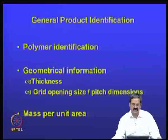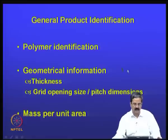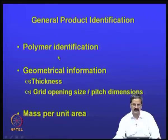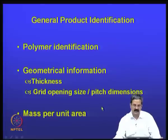We should first identify what the material is. If you have a geocomposite, a geogrid, or a geotextile, we should be able to identify what type of polymer you have, because they are all polymeric materials — chains of carbon and hydrogen atoms. You should also know about geometrical information: what is the thickness, grid opening size, and what is its mass per unit area.